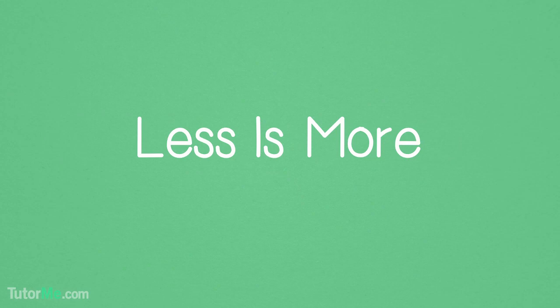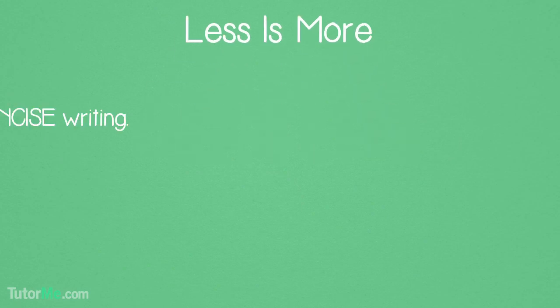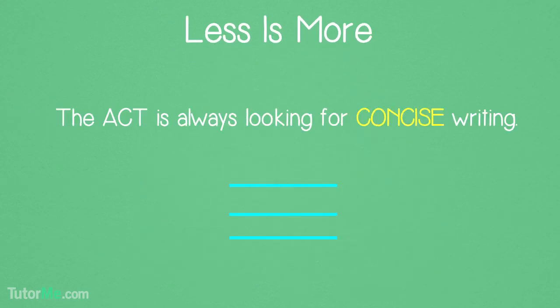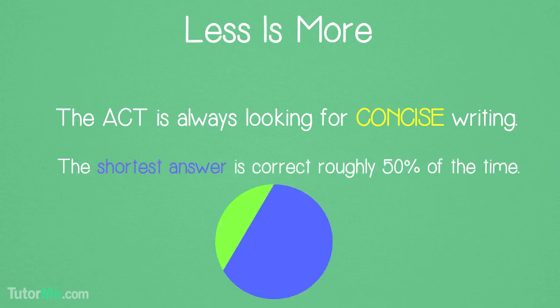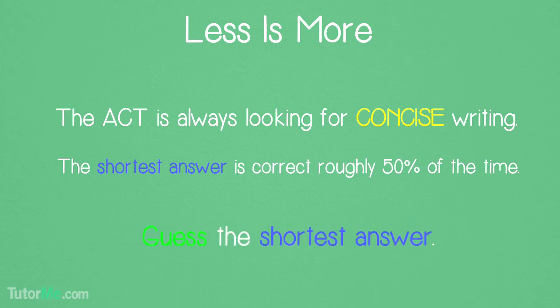Finally, and this is the golden rule of the ACT English Test: Less is more. The ACT is always looking for not just the answer that is grammatically correct, but also the one that is the most concise. The shortest answer is the correct answer roughly 50% of the time. This means if you have to guess on a question, you should guess the shortest answer.